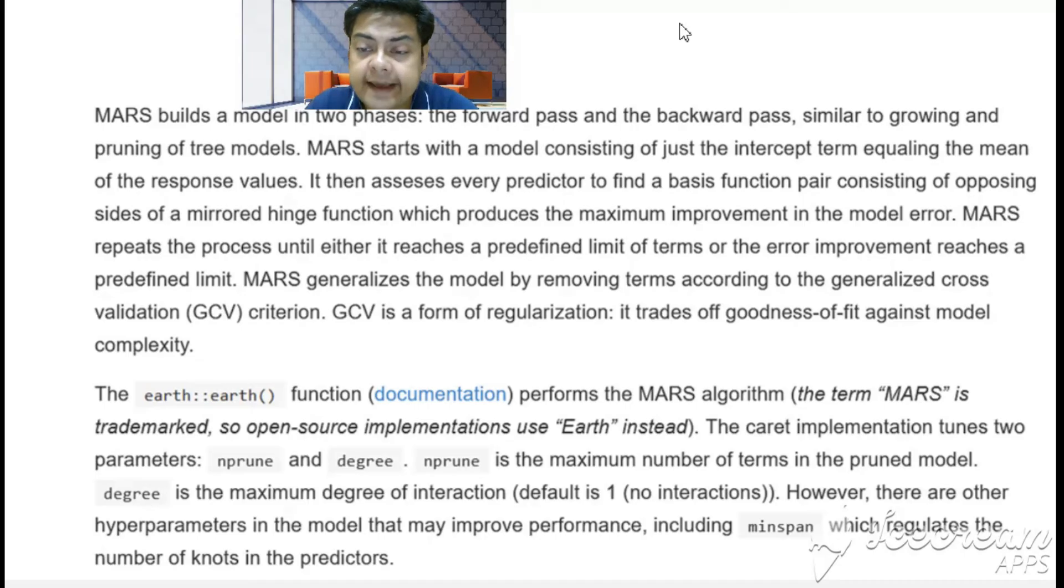MARS generalizes the model by removing terms according to the Generalized Cross Validation (GCV) criterion. GCV is a form of regularization. It trades off goodness of fit against model complexity, so it takes care of goodness of fit but doesn't let the model become very complex. It's a kind of controlling mechanism between the complexity and the robustness of the model. GCV or Generalized Cross Validation is a very important criterion for MARS.